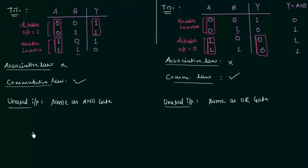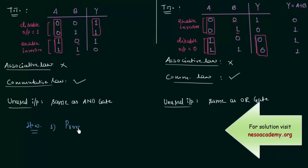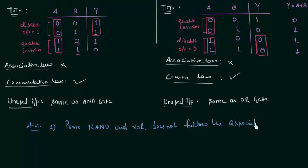Now we will move to the homework problem. There is only one problem in this part: you have to prove that NAND and NOR do not follow the associative law. We have already done this for AND gate, so you can easily do this. This is all for this lecture — see you in the next one.